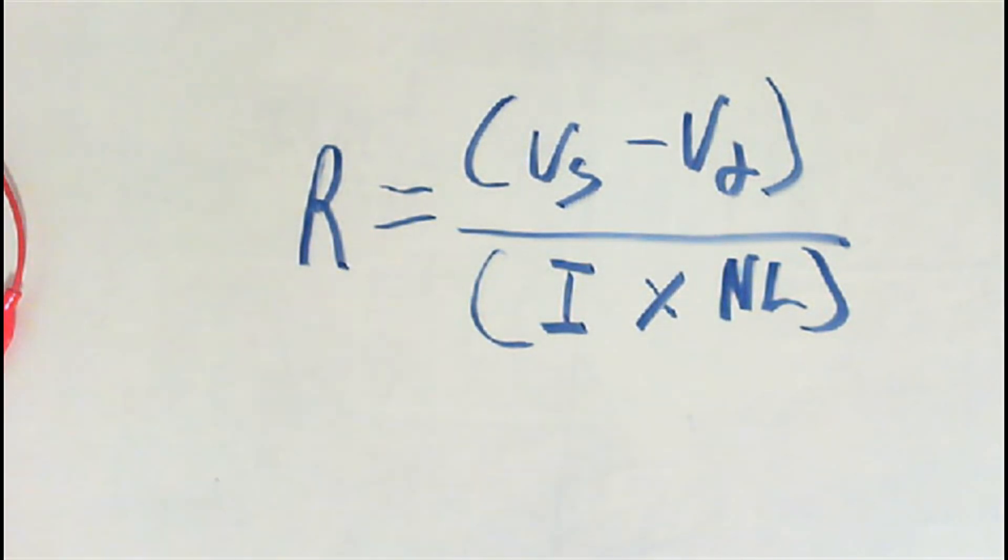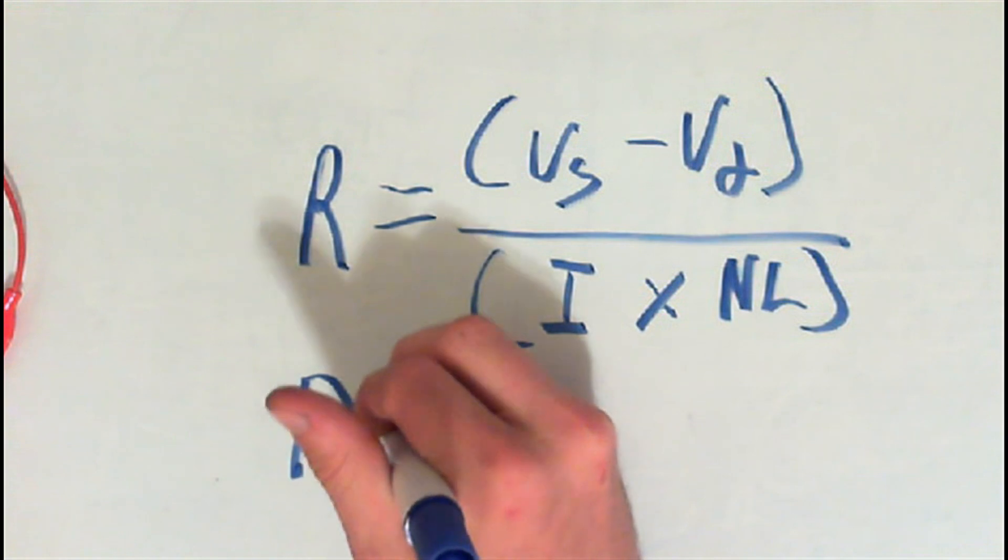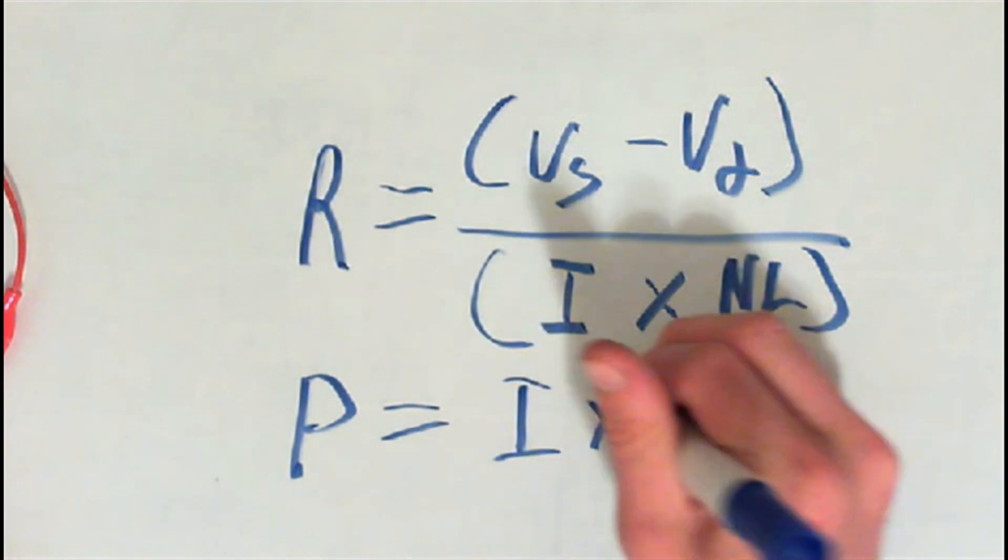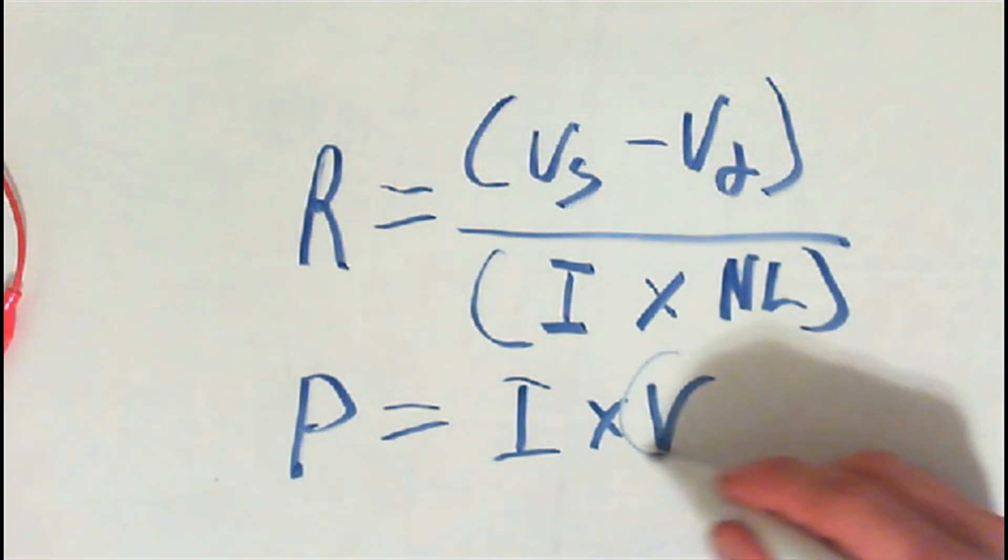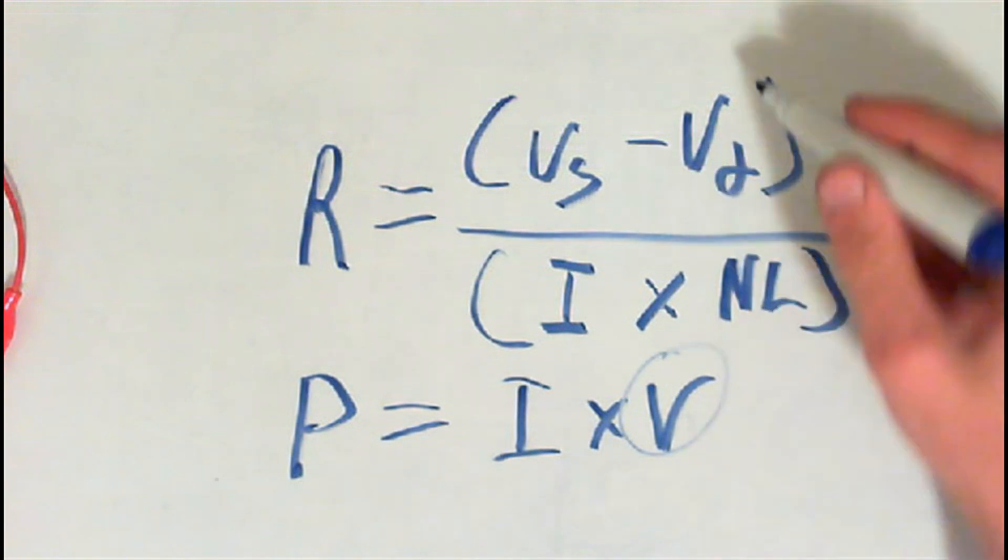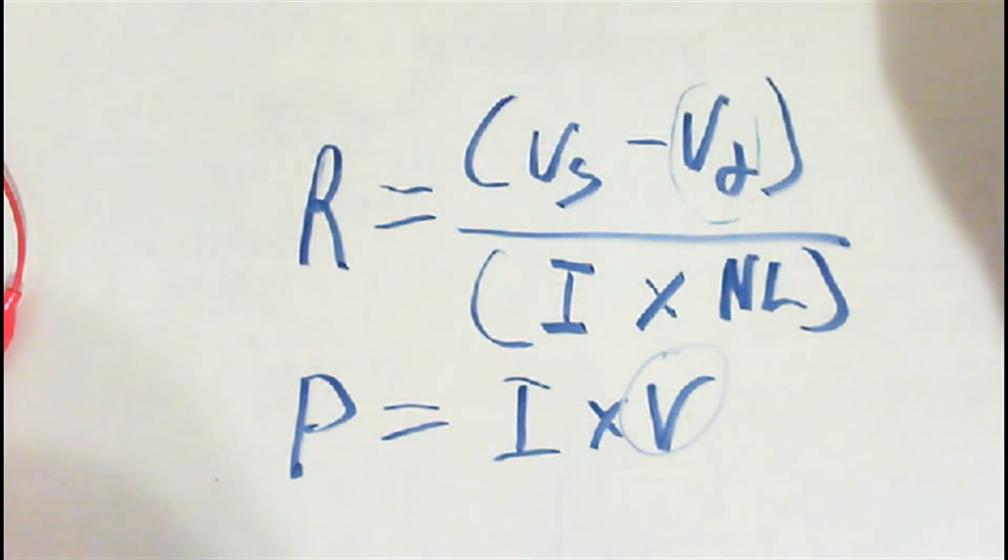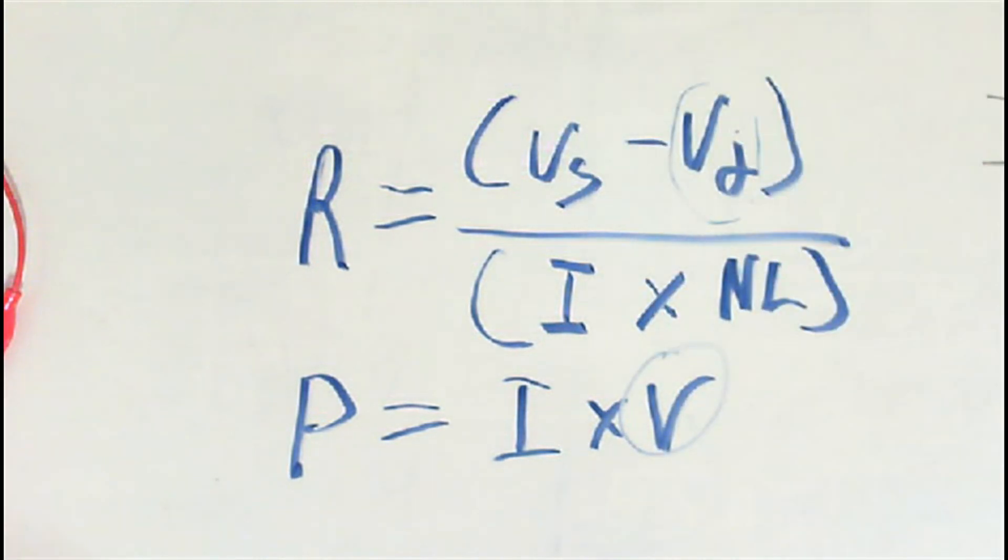And you would only need one resistor for your circuit. And you do need to solve for power of that. Which, P, power or watts, equals current times the volts. And that's the voltage drop. So that would be this. Not this voltage drop. But the voltage drop that the resistor is going to be dropping, which is the V source subtract V drop of the LED.